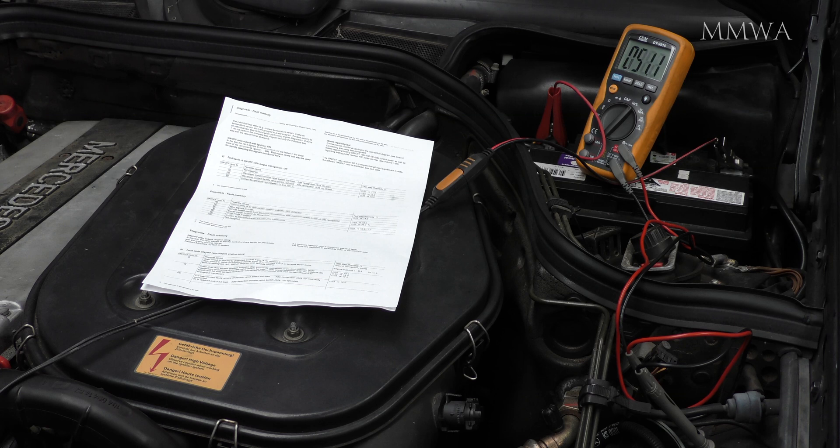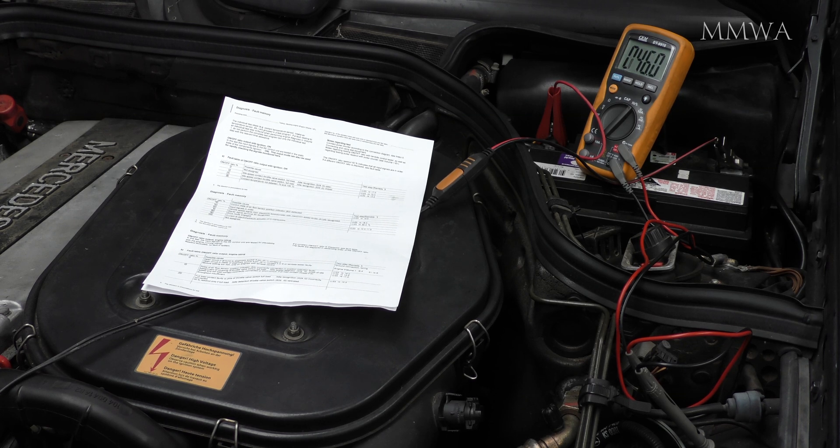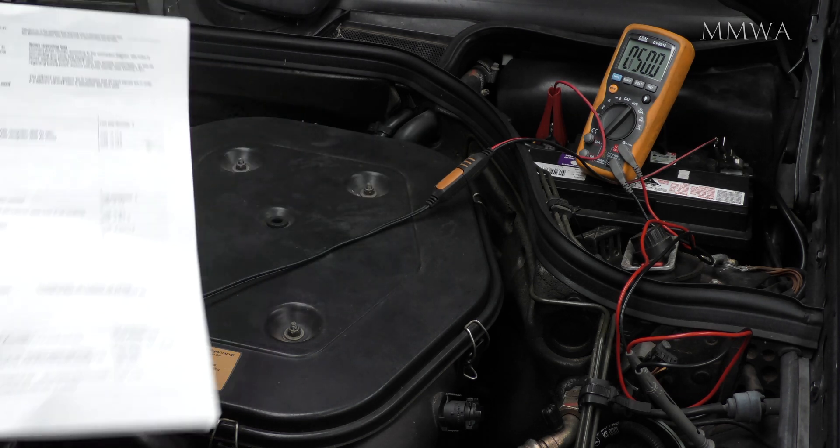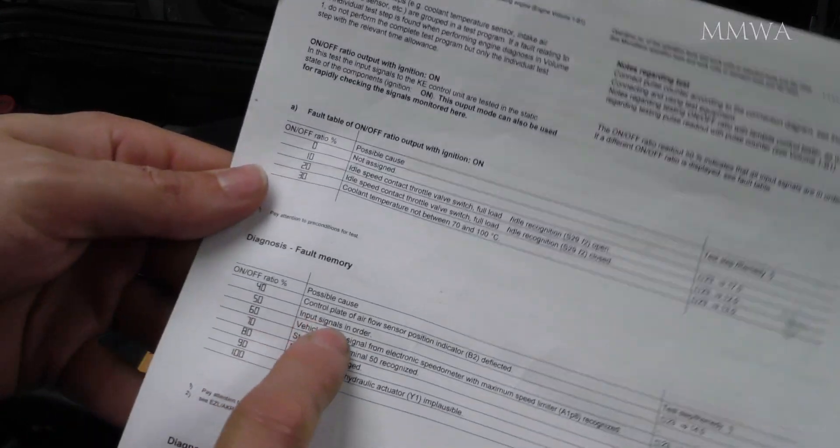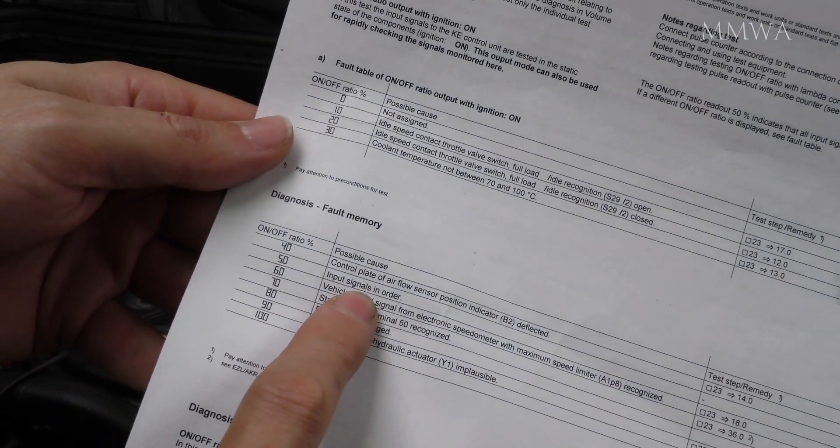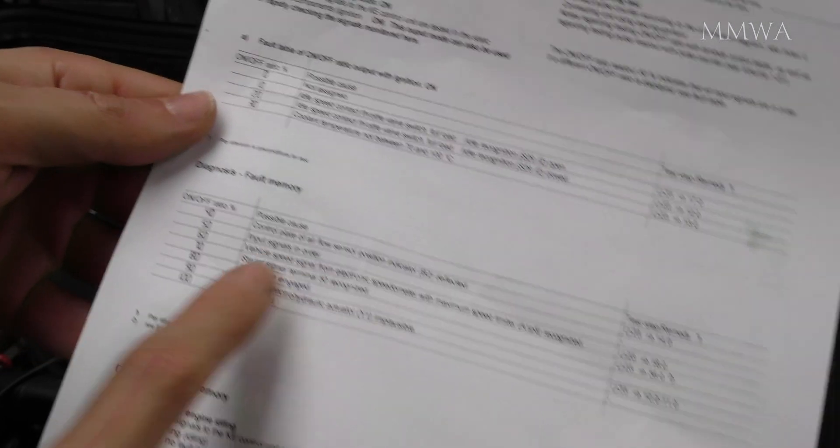So when the engine is at operating temperature, it should be fluctuating around 50%. And then once it's shut down, you do the key on engine off and 50% is what you want to see. And that's indicating all input signals are in order. So that gives this thing a big fat tick.